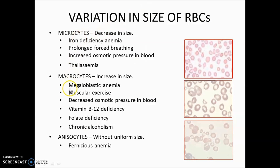RBC size variations: microcytes (decreased size), macrocytes (increased size), and anisocytes (RBCs of non-uniform size, most commonly seen in pernicious anemia). Macrocytes are seen in megaloblastic anemia, vitamin B12 deficiency, folate deficiency, and chronic alcoholism. Microcytes are seen in iron deficiency anemia, forced breathing, increased osmotic pressure, and thalassemia. When osmotic pressure increases, RBC size decreases; when it decreases, RBC size increases.